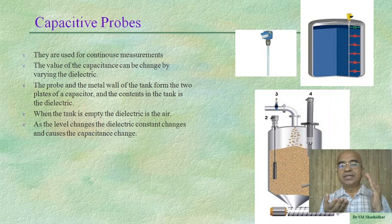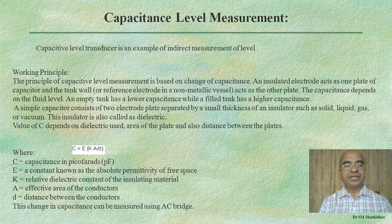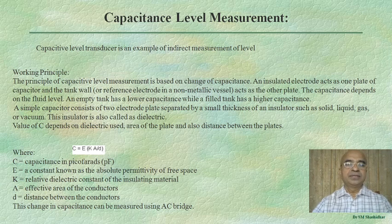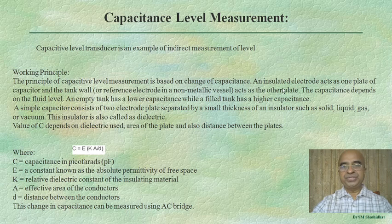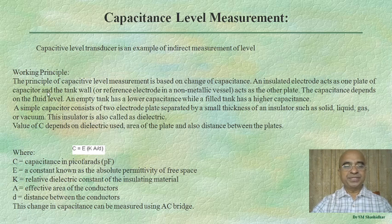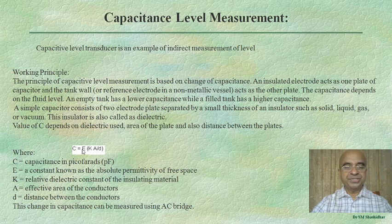We can map the value of the dielectric constant to the level of the liquid in the tank to obtain capacitance-based level measurements. This is an indirect method. The principle is based on change of capacitance: an insulated electrode acts as one plate and the tank wall as the other. An empty tank has a lower capacitance while a filled tank has a higher capacitance.